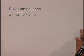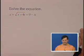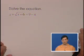Solve the equation x plus the square root of x plus 6 equals 9 minus x. Now, we do need to get rid of the radical, but until we get the square root by itself, squaring both sides will just create a mess.